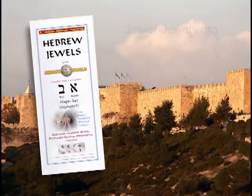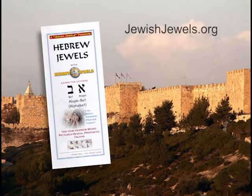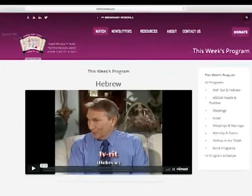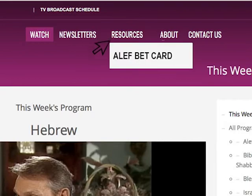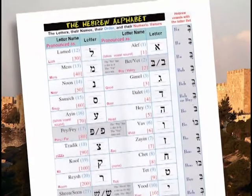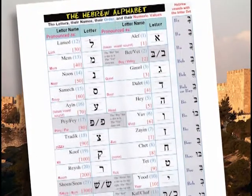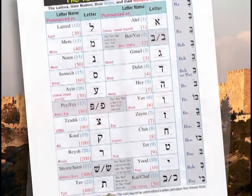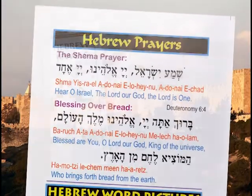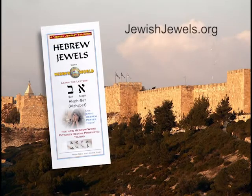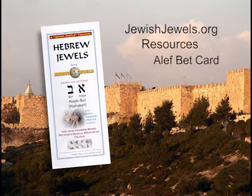You can download a copy free from our website at jewishjewels.org. Simply select the resources drop-down menu and then choose the Alephbet card. The Alephbet card will teach you how to pronounce each Hebrew letter and vowel, and will also teach you a few basic Hebrew blessings.